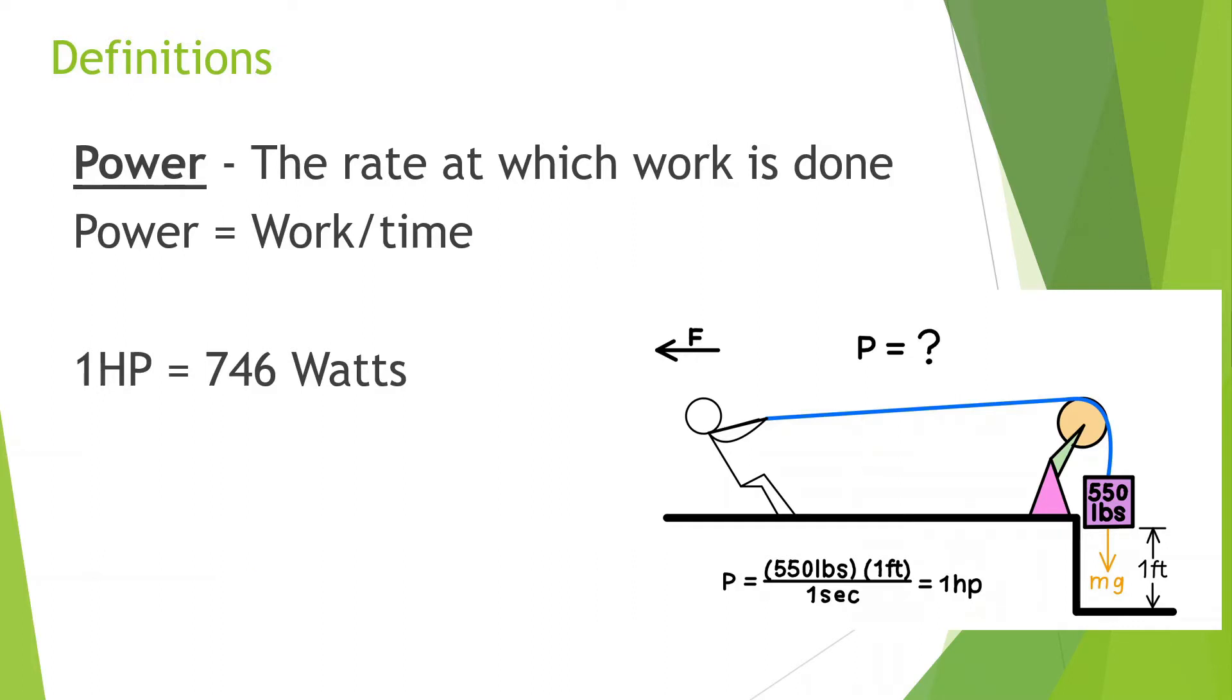Power is the rate at which work is done. What that means is how much work you do divided by how quickly you do it. The faster you do a certain amount of work, the more power you produce. The longer it takes you to do a certain amount of work, the less power you produce.